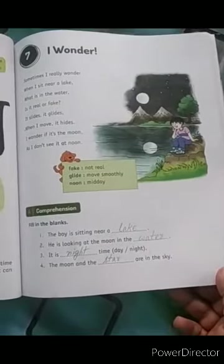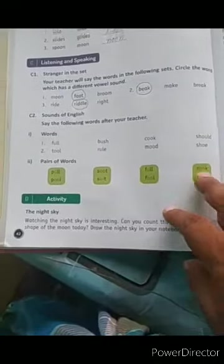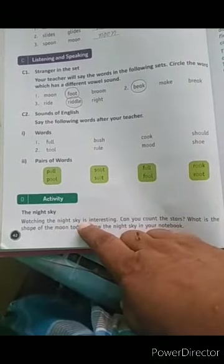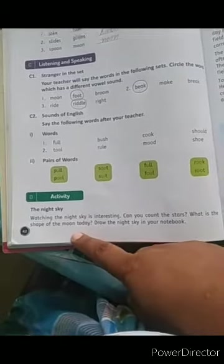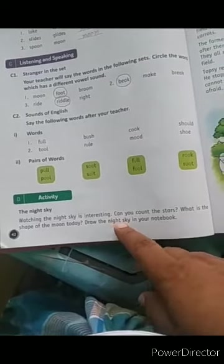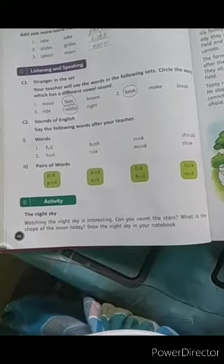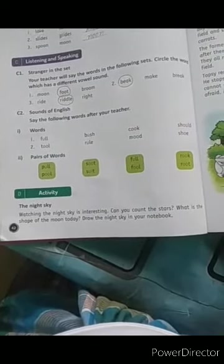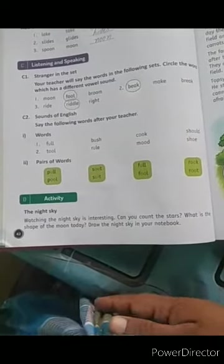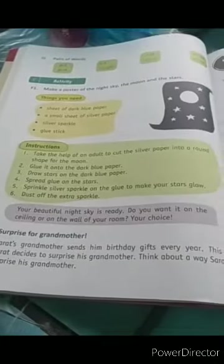You all have an activity ahead called The Night Sky, watching the night sky is interesting. This is for you to do - in the sky you will look at the moon and count the stars, and write what is the shape of the moon today in your notebook. So I hope you all will complete this and try to do the activity. Today we will stop the class here. Thank you.